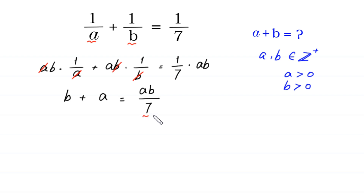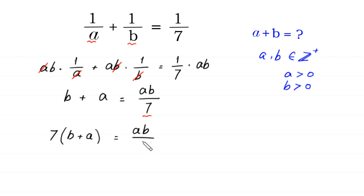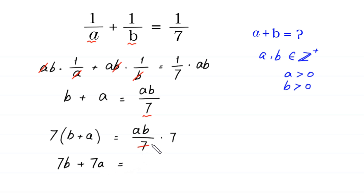Now, because here we have 7, we multiply both sides of this equation by 7. So 7 times b plus a is equal to ab over 7 times 7. That gives us 7b plus 7a equals ab, since the 7s cancel on the right side.